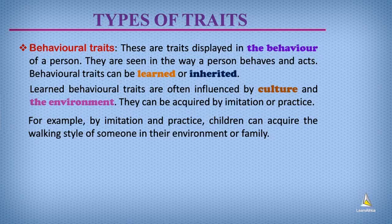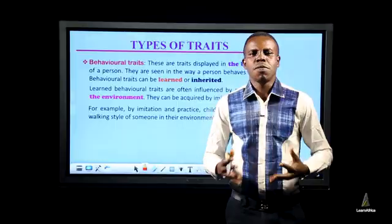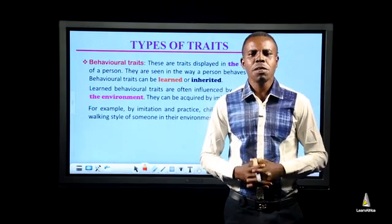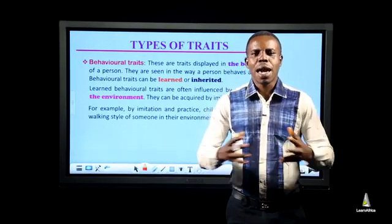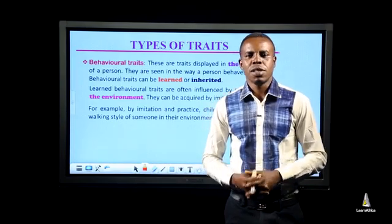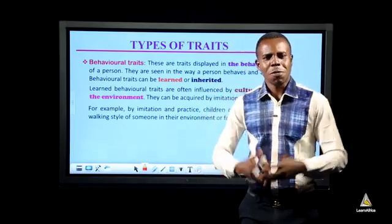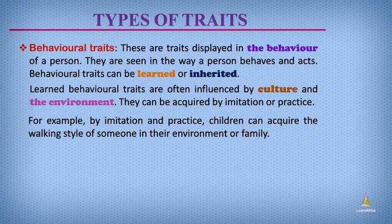Behavioral traits are traits that are displayed in a person's behavior. They are seen in the way a person behaves and acts — that is to say, they are seen in our actions. Behavioral traits can be inherited or learned. Learned behavioral traits can be acquired by imitation or practice. They are often influenced by culture and the environment. For example, a child may acquire the working style of someone in their family or environment through practice and imitation.